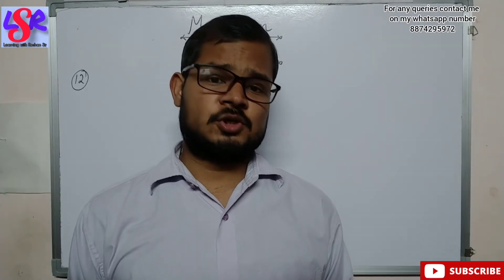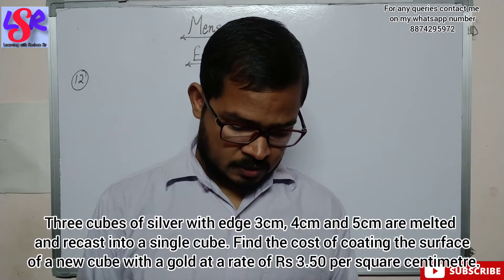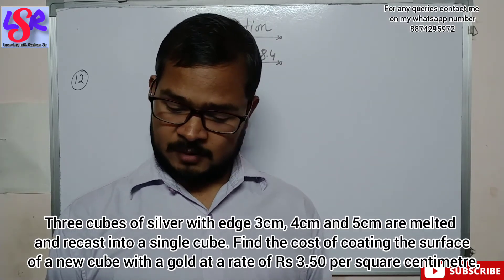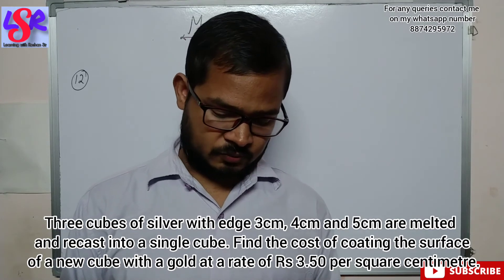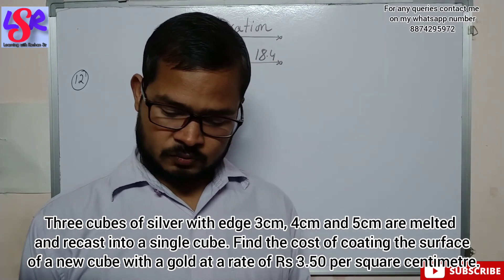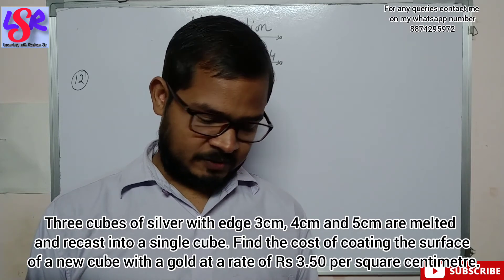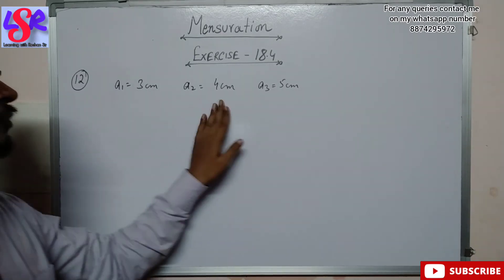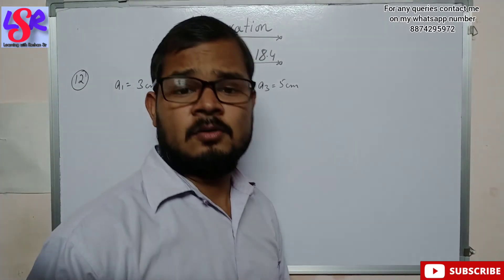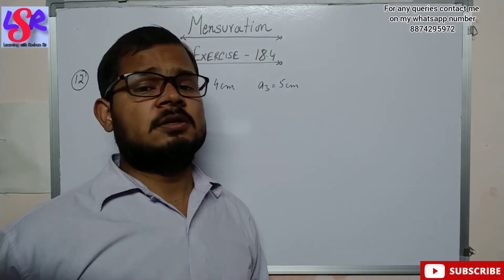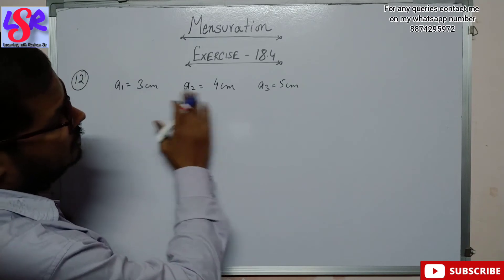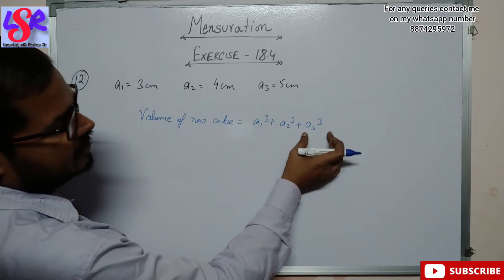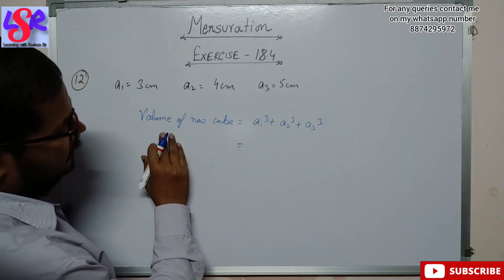Now question number 12: three cubes of silver with edges 3 centimeter, 4 centimeter and 5 centimeter are melted and recast into a single cube. Find the cost of coating the surface of the new cube with gold at a rate of rupees 3.50 per square centimeter. We have three cubes of dimensions 3 cm, 4 cm and 5 cm, and we form a single cube. Let the edge of the new cube be a.